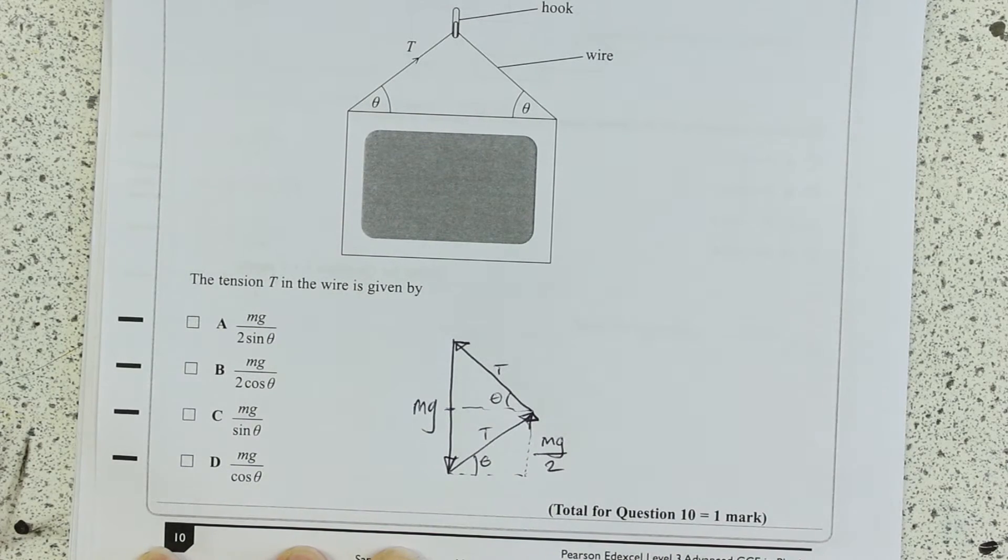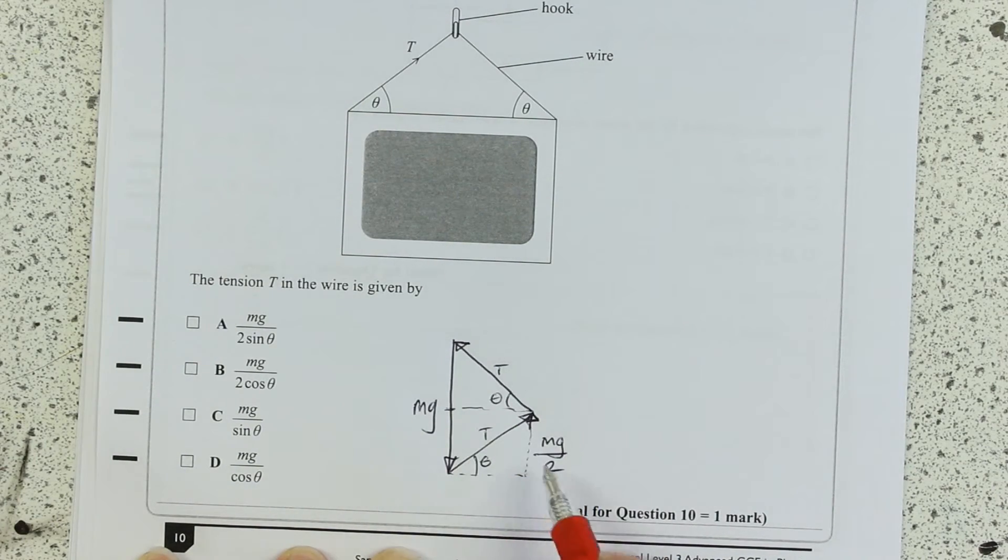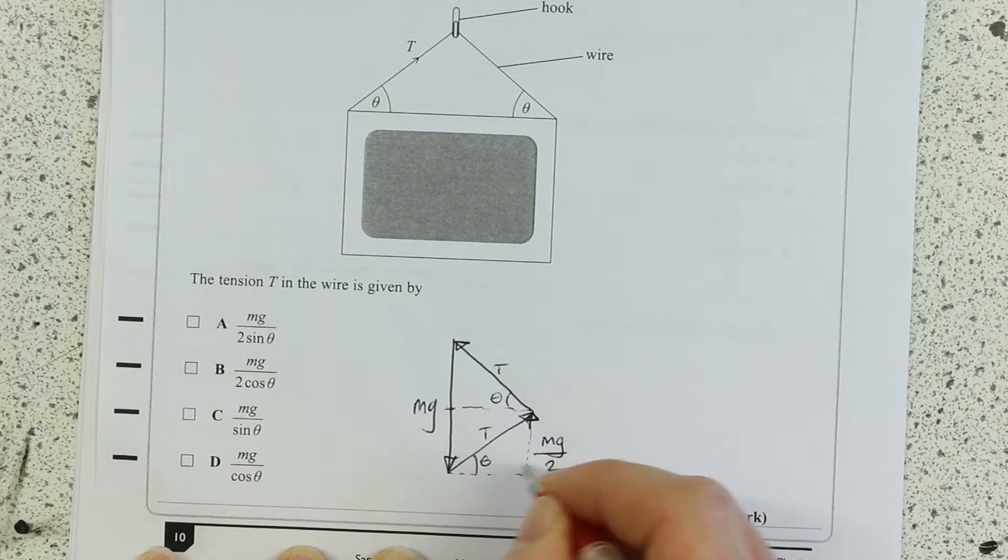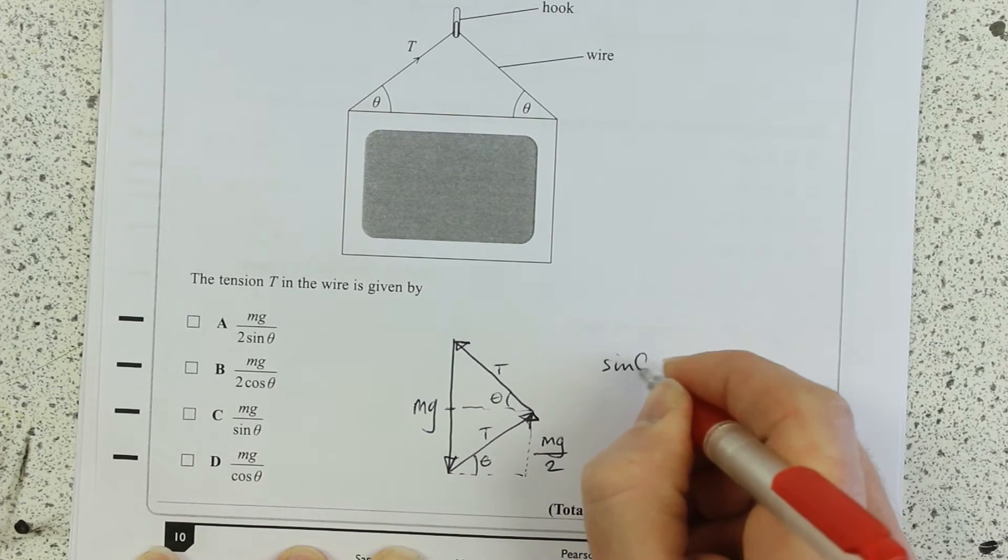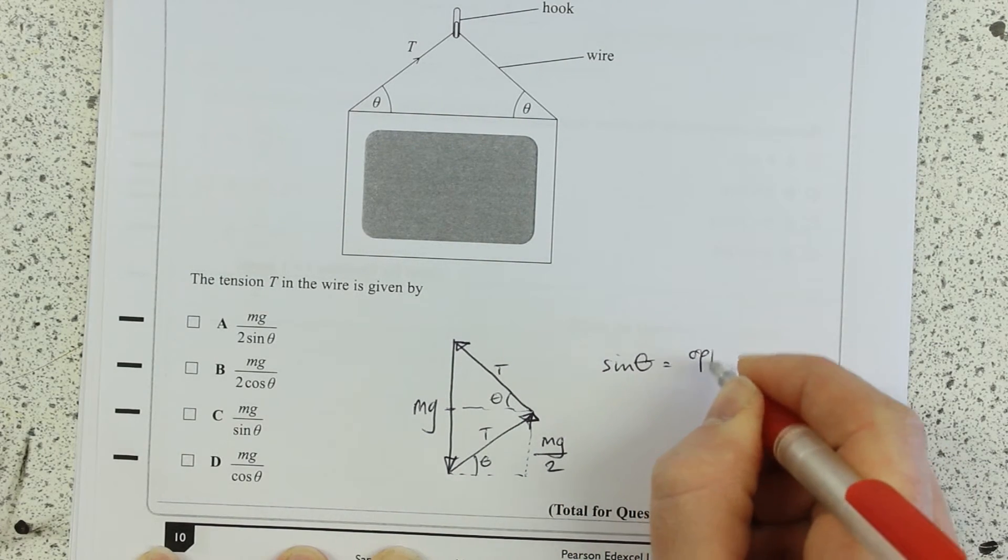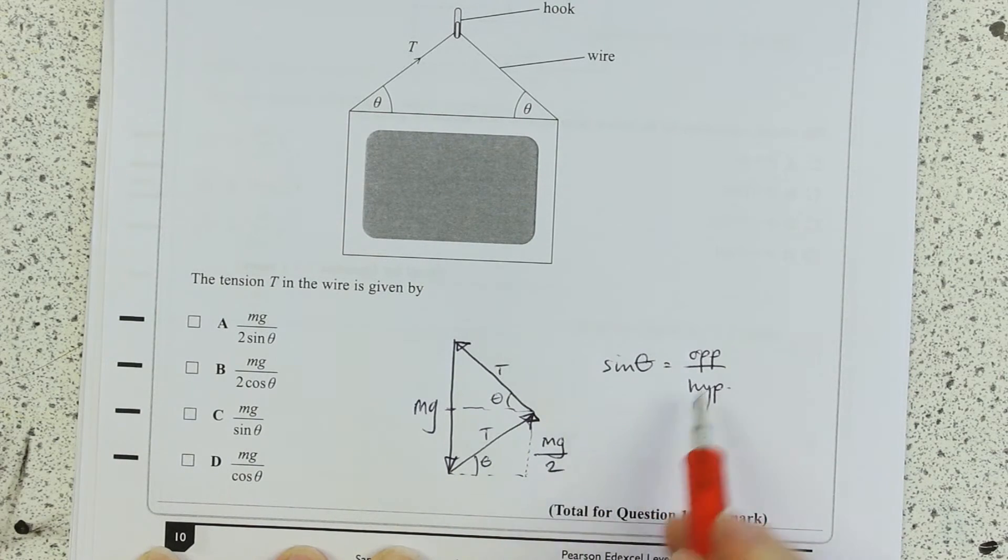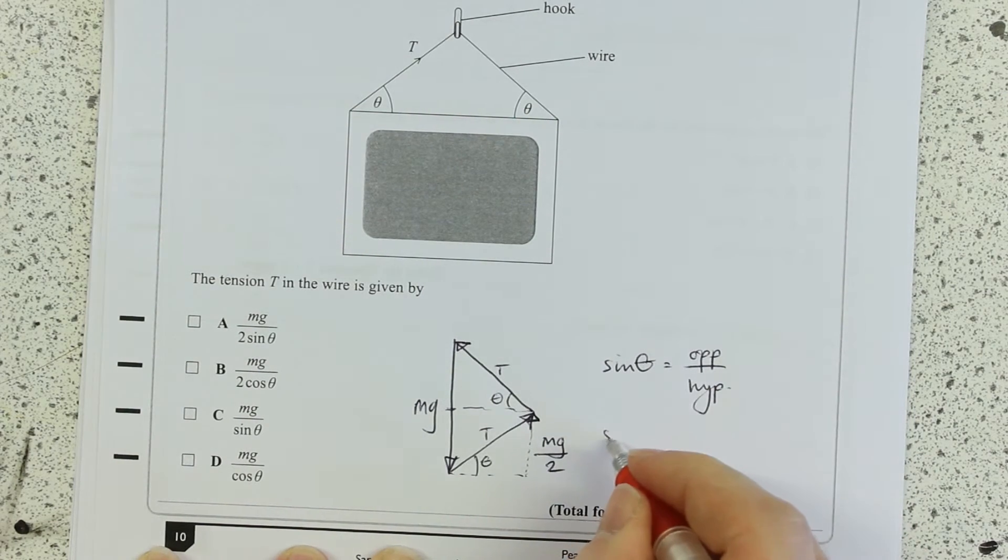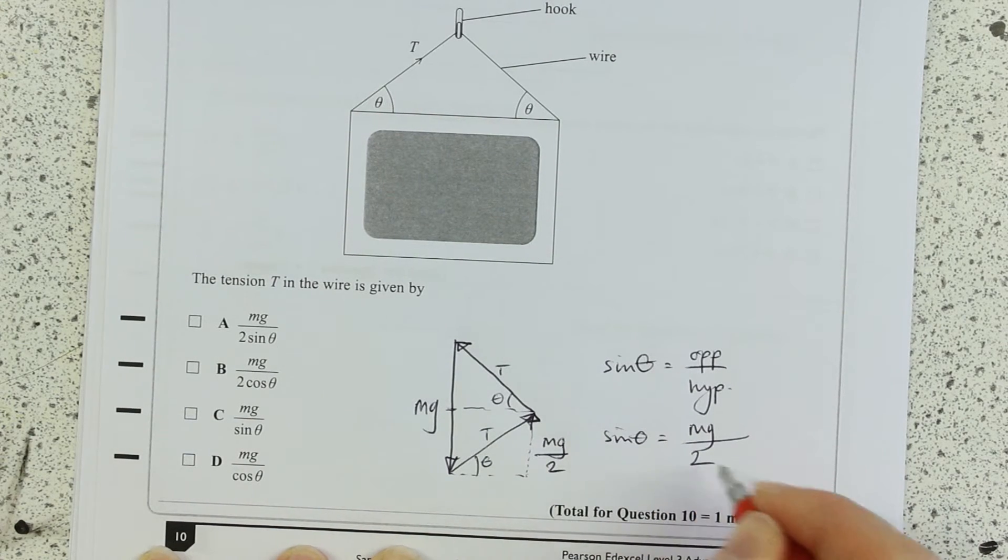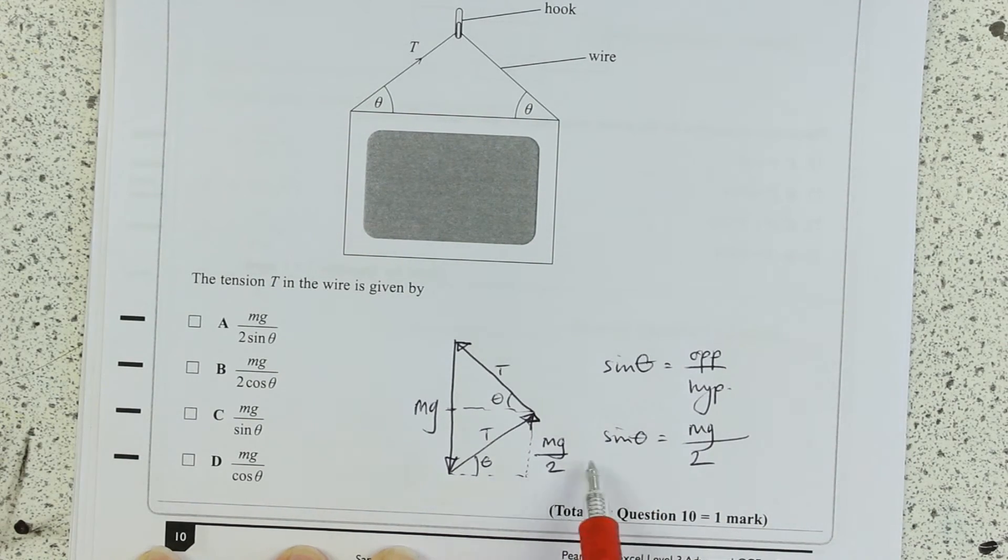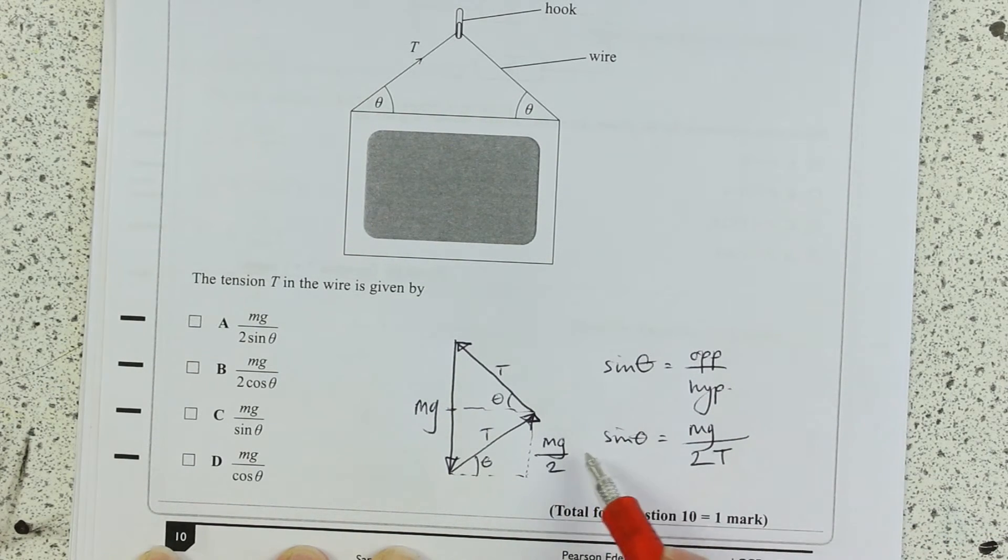Mg over 2. So now I can just get myself a trigonometric relationship here. And it's going to be the opposite and the hypotenuse. So sine of the angle is the opposite over the hypotenuse. What is the opposite? It's Mg over 2. So sine theta is Mg over 2.